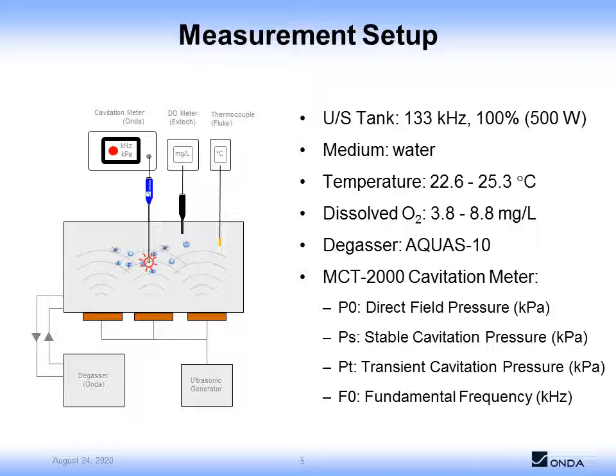The experiment relies on cavitation measurements in a 133 kilohertz ultrasonic cleaning tank that was coupled to an inline vacuum degasser. The medium is water, and the temperature is controlled within a range between 22.6 degrees Celsius and 25.3 degrees Celsius. To measure the dissolved gases, we use a dissolved oxygen meter as the degassing system varied the level between 8.8 milligrams per liter — which is the concentration of starting tap water — down to a degas level of 3.8 milligrams per liter. We used a cavitation meter called the MCT-2000 to measure the acoustic pressure from the stable cavitation, transient cavitation, and the direct field, as well as the fundamental frequency.